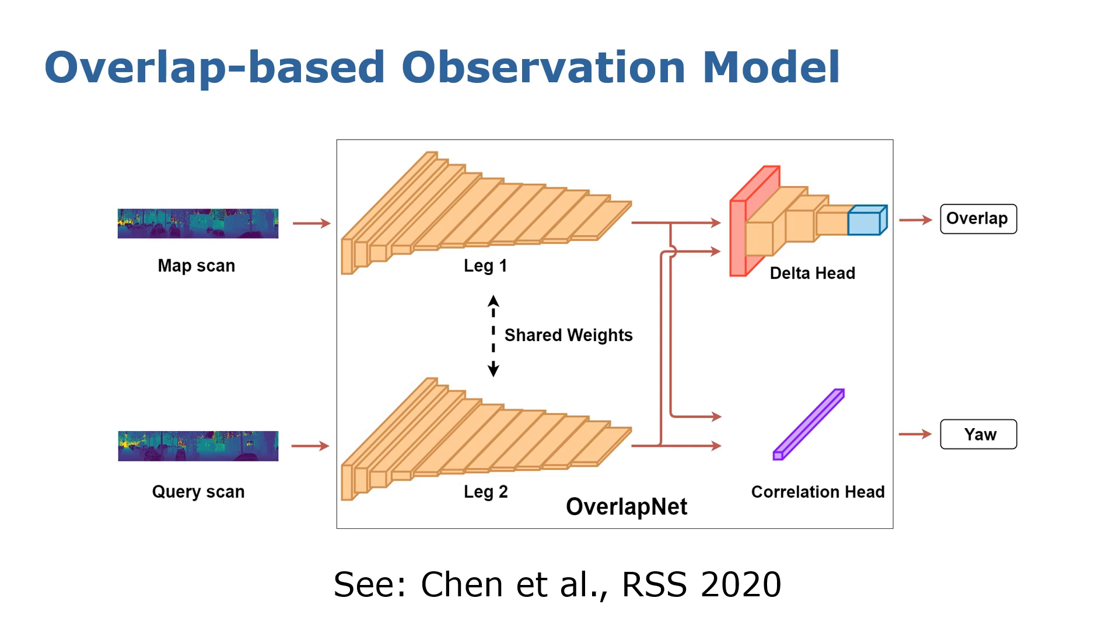In this work, we built a new observation model for Monte Carlo localization based on the overlap and relative yaw angle estimates between the query scan and the map scan.